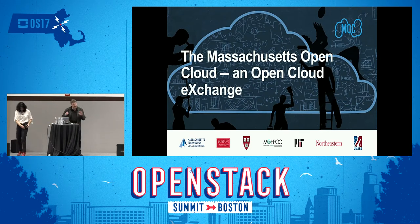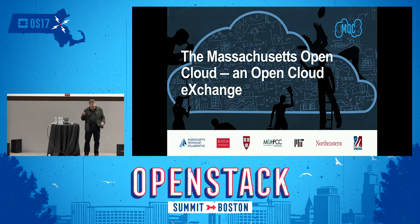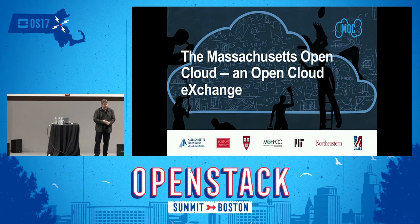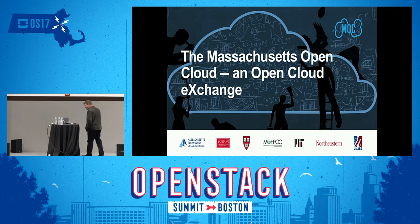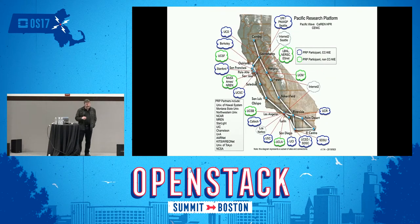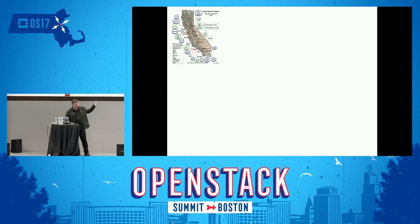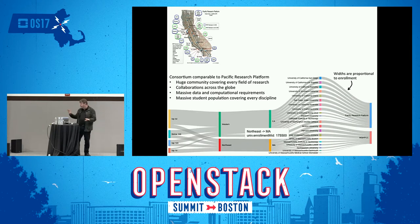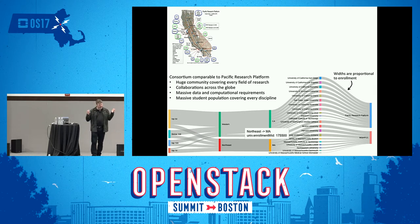Let me tell you a little bit about the Massachusetts Open Cloud, a regional project. It involves five of the largest universities: Boston University, the whole UMass system, Northeastern, MIT, and Harvard — about 175,000 students. To give a sense of scale: the Pacific Research Platform covers the entire Pacific Coast of the US. The MGH-PCC consortium that the MOC is based on is actually equivalent in size, with the same number of students and massive communities of scientists covering every field of research with collaborations across the globe.